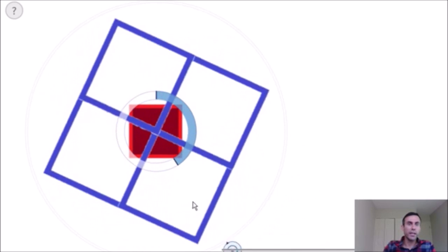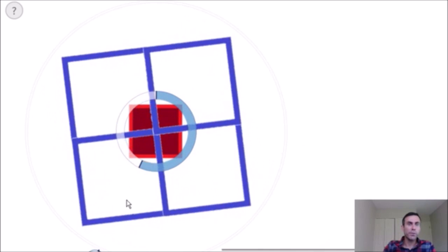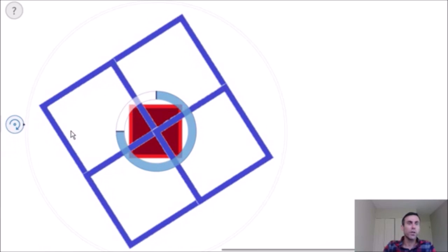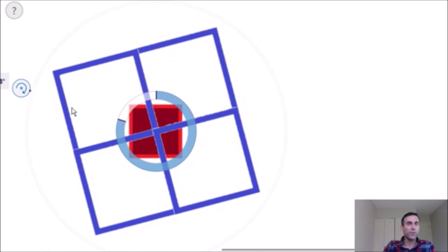So no matter how you rotate these four squares, the shapes are going to be exactly the same and it's always going to represent one quarter of the area of the red square. Alright, so now if we go back to our original problem.